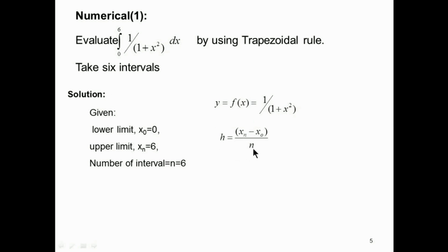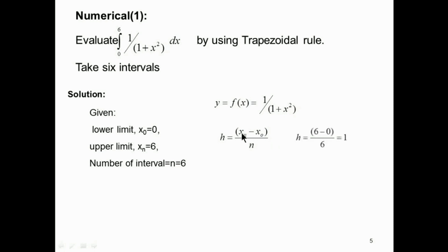In some cases, instead of the number of strips, the strip size will be given directly in the problem, and from that strip size we can calculate the number of strips. Here, the number of strips is given, so h is calculated using the formula h = (xn − x0)/n, giving h = 1.